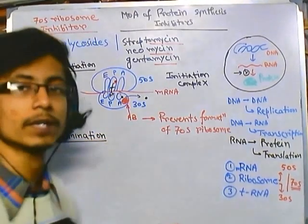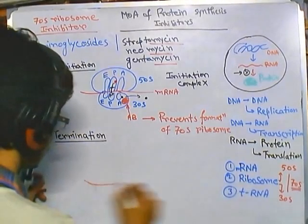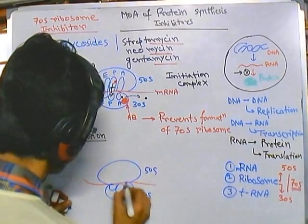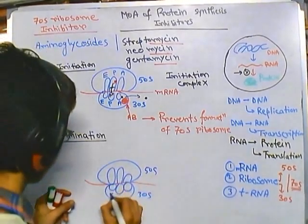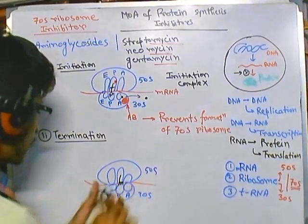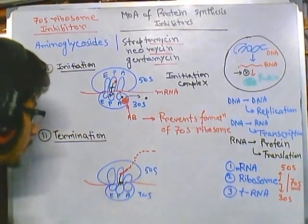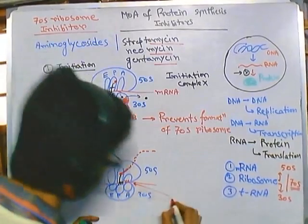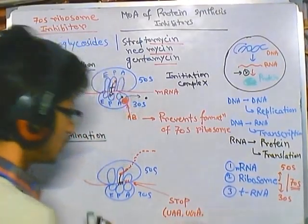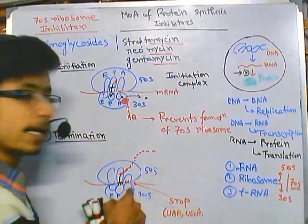Aminoglycosides can also block the termination of protein synthesis. During termination, the mRNA is there with the 30S and 50S assembled, having E, P, and A sites. A tRNA is sitting at the P site carrying a large polypeptide chain that has been produced. At a certain site on the mRNA there is a stop codon — UAA, UGA, and a third stop codon — these three stop codons signal termination.